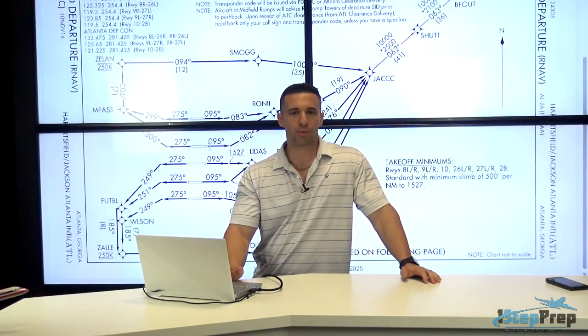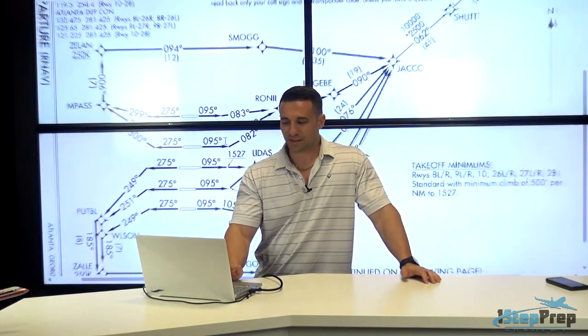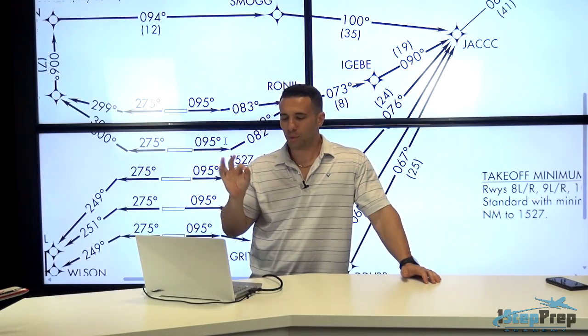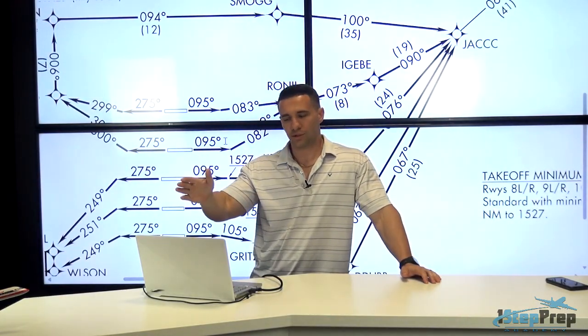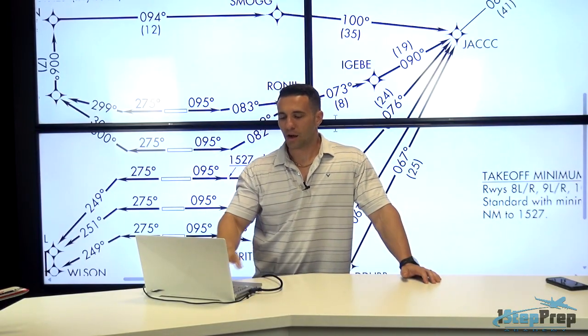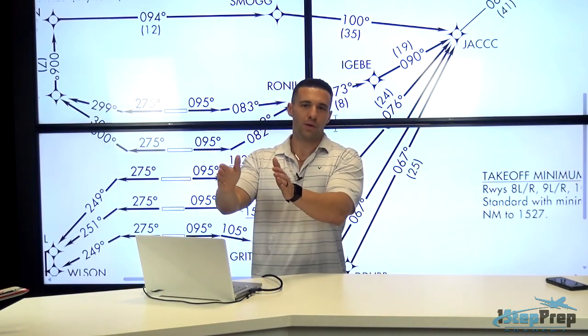So for my flight plan to properly sequence the needed waypoints to comply with this SID, I would need to load 8 right on the Jack 2 departure with the needed transition, if applicable. And that is how I'm going to see 8 right going to Roni on the departure.